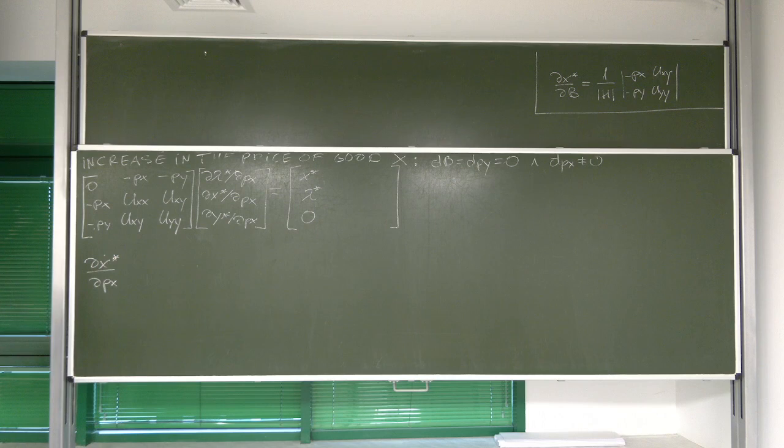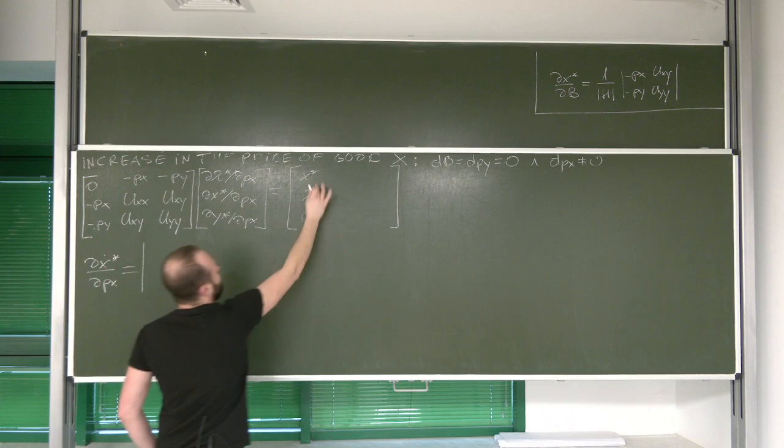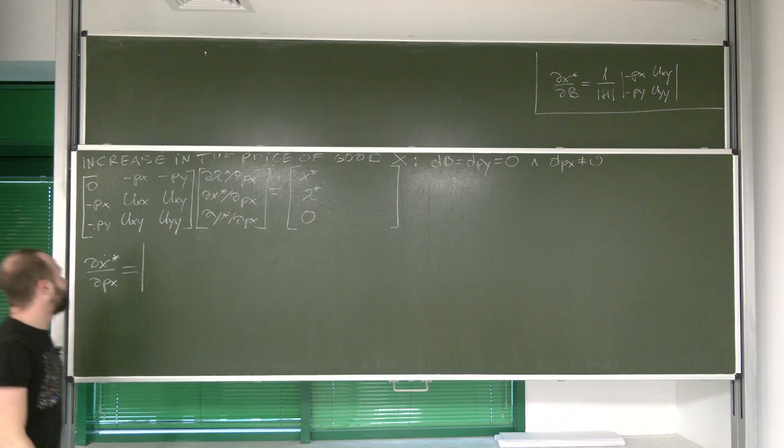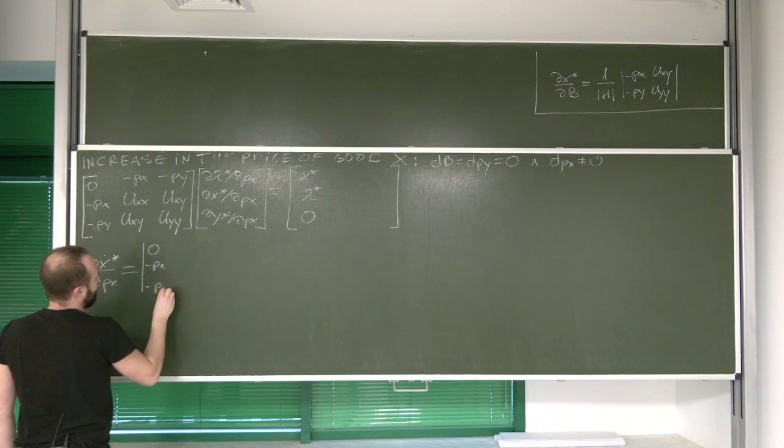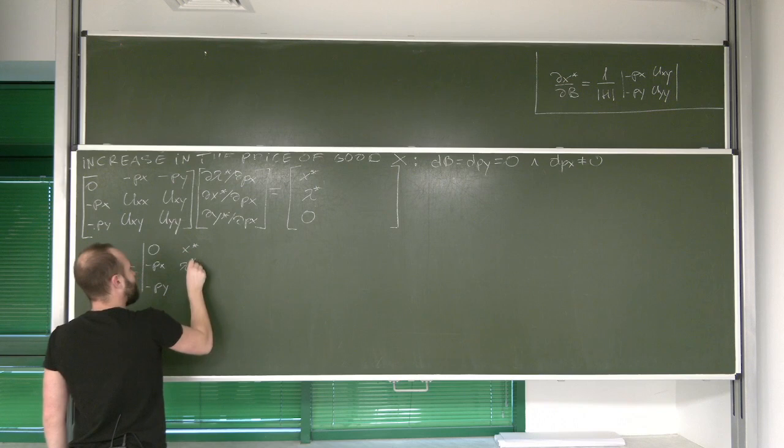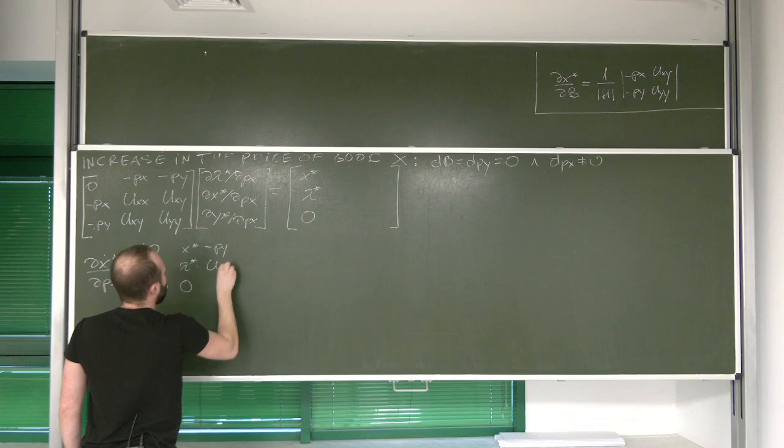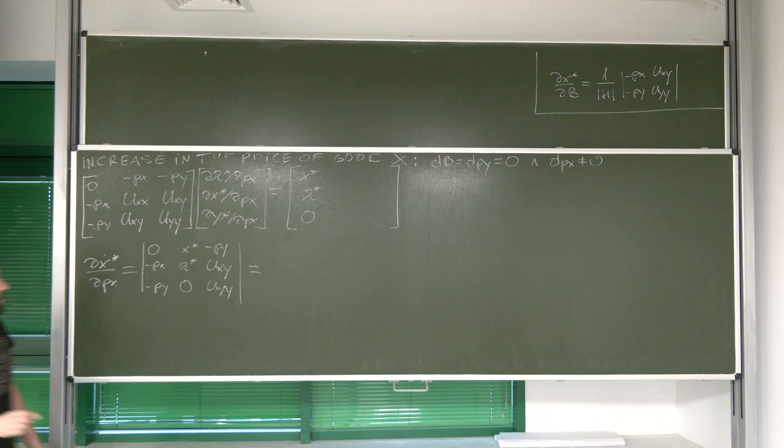In order to get it, we replace the second column of the matrix with the vector of exogenous terms. Those are x, lambda, and zero. And here we've got Py, Uxy, Uyy. We're going to deal with this determinant using Laplace expansion. We're going to expand with respect to this row, because this actually leads us to a very nice result.